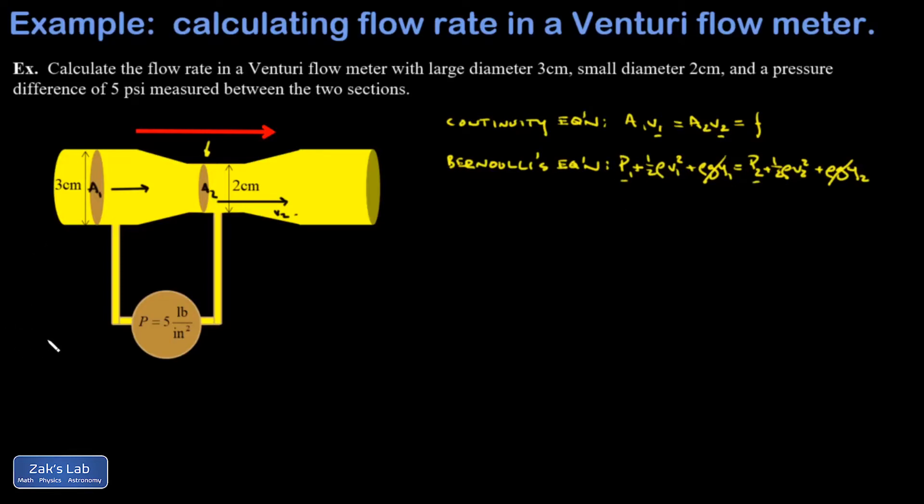Taking a look back at our venturi flow meter, what's the overall plan? You put a constriction in the pipe that causes the speed to go up, and that speed difference is going to lead to a pressure difference by way of Bernoulli's equation.